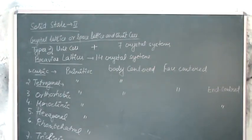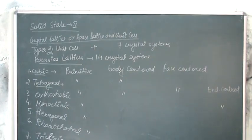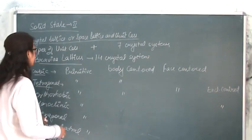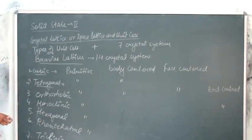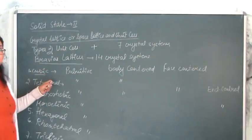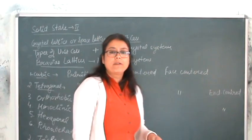So now we are going to combine both our topics, that is types of unit cell and 7 crystal systems, which gives us 14 crystal systems which are known as Bravais lattices.